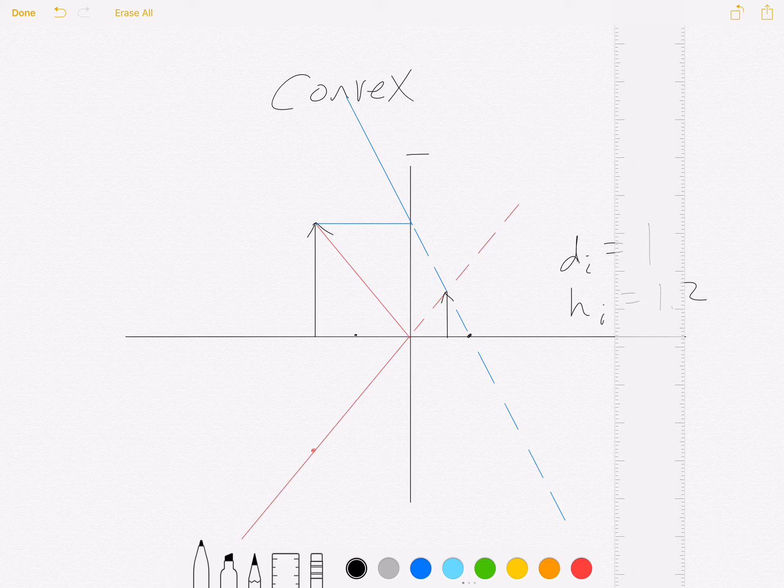So we drew our focal points, we draw our object, we determine the location and height of our image, and that's all there is to convex mirrors. Regardless of how close or far away you get from the mirror, you're always going to form a virtual image since those rays diverge from one another. All right, that's it for today. Thanks for watching.